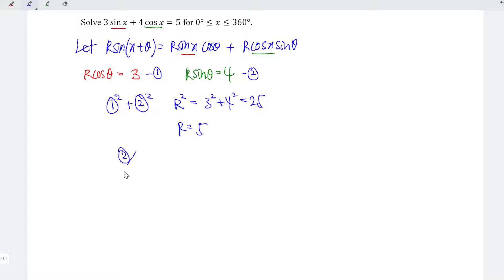Next, we take the second equation divided by the first equation. So we have tan theta is equal to 4 over 3, which means that theta is equal to arctan 4 over 3, and this is equal to 53.13 degrees, rounded to the nearest two decimal places.